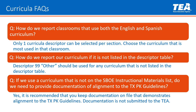For frequently asked questions on curriculum: If a classroom uses both English and Spanish curriculum, only one curricula descriptor can be selected per section — choose the curriculum most used in that classroom. If a curriculum is not listed in the descriptor table, use descriptor 99, 'Other.' If a curriculum not on the SBOE instructional materials list is used, documentation of alignment to the Texas pre-kindergarten guidelines is recommended to be kept on file. Documentation is not submitted to the TEA.